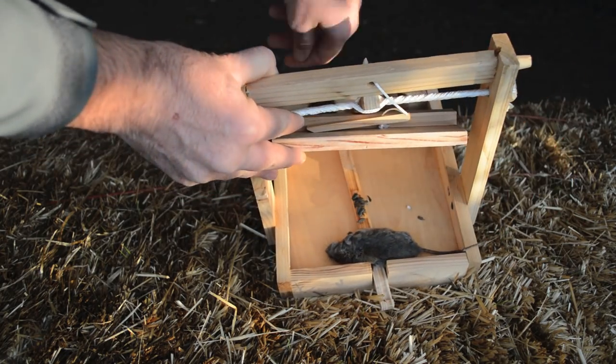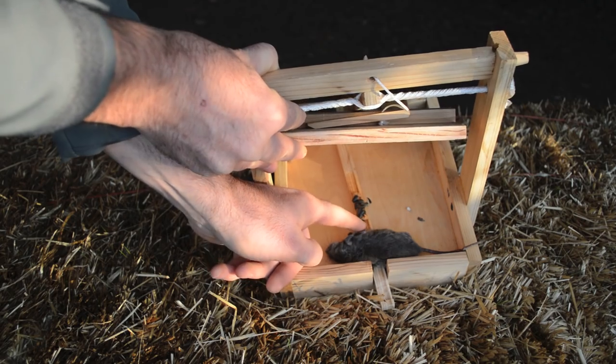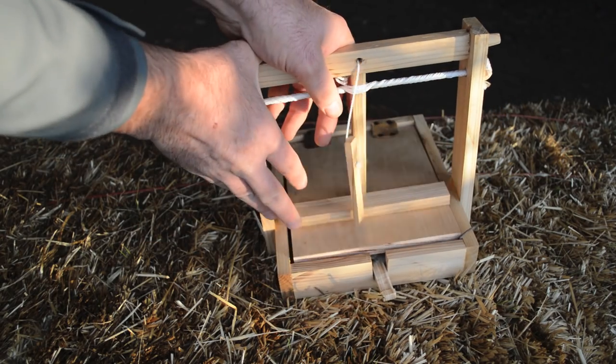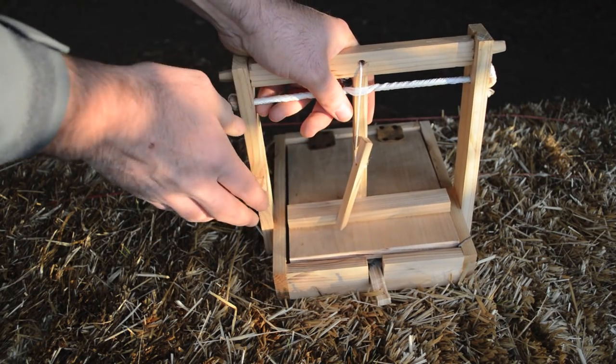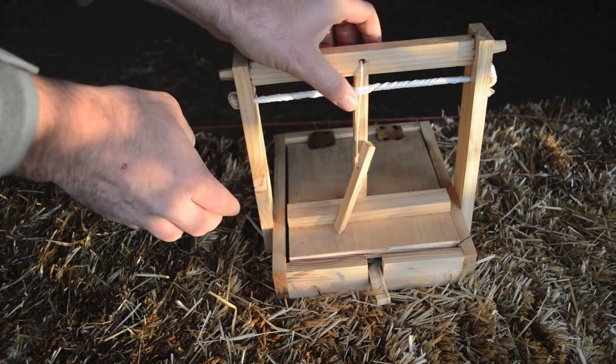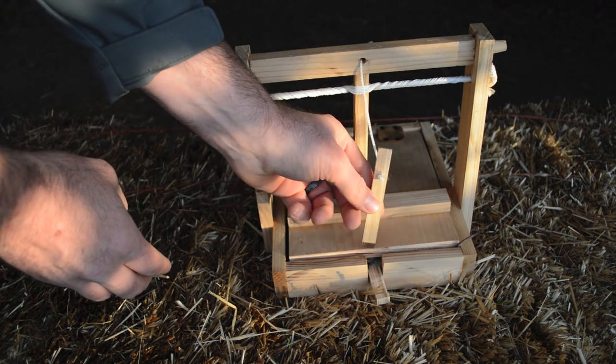It looks like it crawled over, tried to get the bait, stepped right there on the little trigger stick and this came slamming down. It looks like it died very quickly, a humane trap, and this is one of the most sensitive trigger systems that I've ever tested.